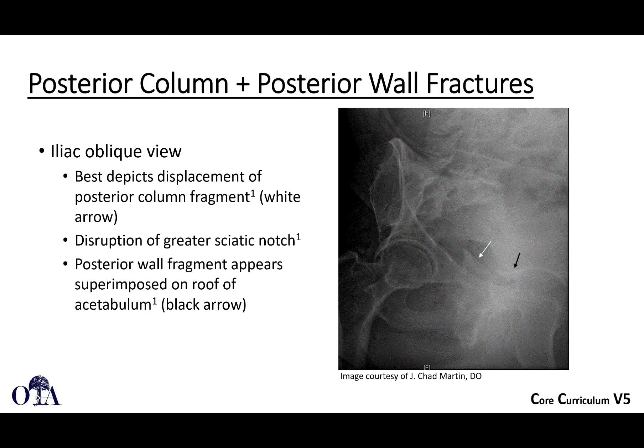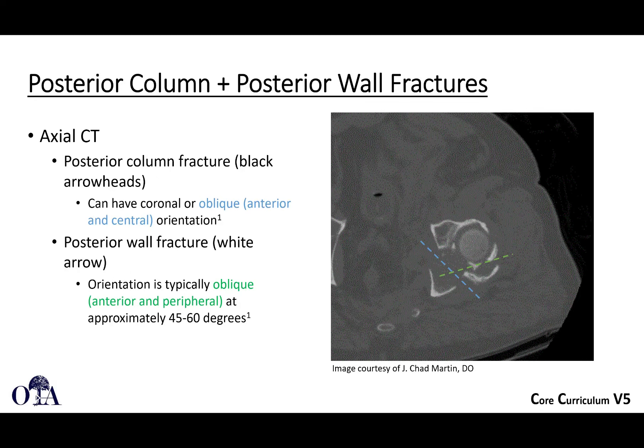On the iliac oblique view, looking at the left hip, you're going to see displacement of that posterior column fragment shown by the white arrow. You're going to see disruption of the greater sciatic notch at that level frequently, and the posterior wall fracture might be superimposed on the roof of the acetabulum, shown by that black arrow. On CT scan, you will see the posterior column fracture and the posterior wall fracture. You may have marginal impaction. Here you can see that posterior column fracture extending where the blue line is. When you see a posterior wall but also disruption further down through the obturator foramen, you have to consider that maybe you're dealing with posterior column, posterior wall.